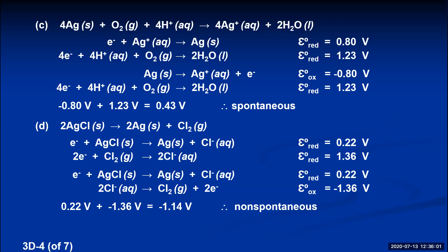So if you have any silver chloride precipitate sitting in a beaker, you don't have to worry about it turning into elemental silver and poisonous chlorine gas.